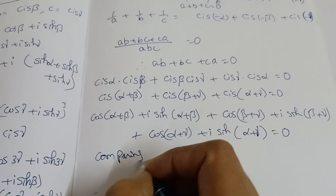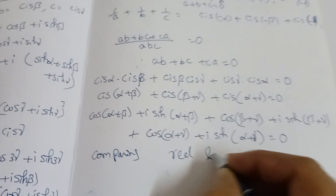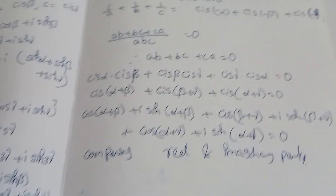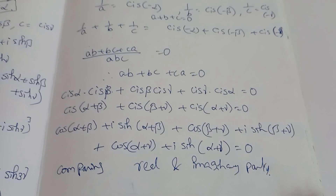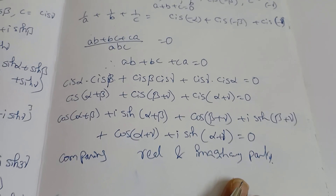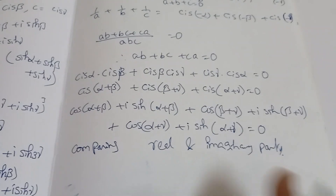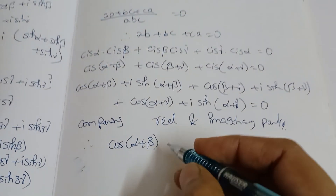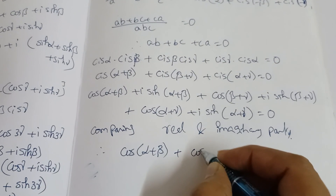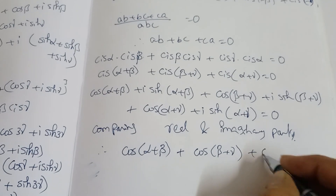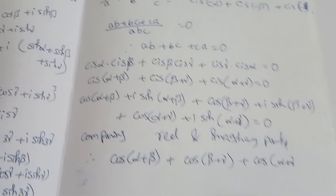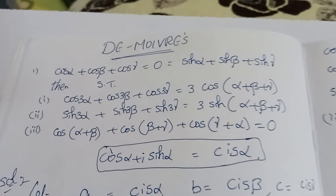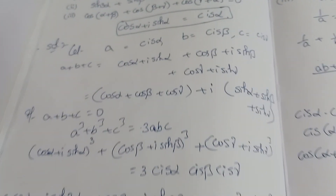Comparing real parts and imaginary parts on both sides: real parts equal 0 and imaginary parts equal 0. Therefore cos(α+β) + cos(β+γ) + cos(α+γ) = 0. That is proved. All three parts — 1, 2, and 3 — are proved. Understood?